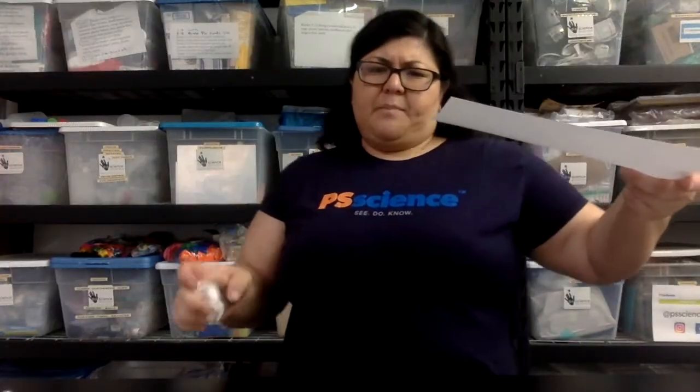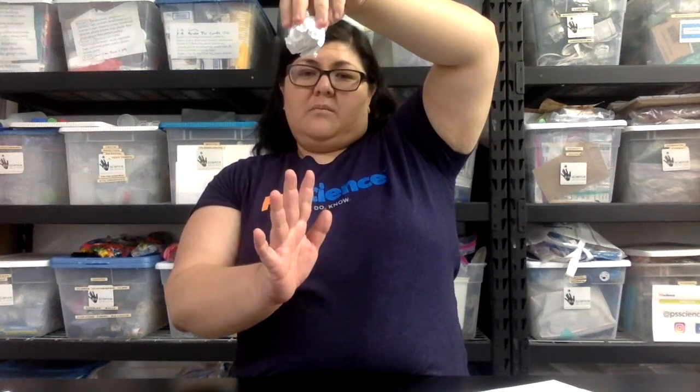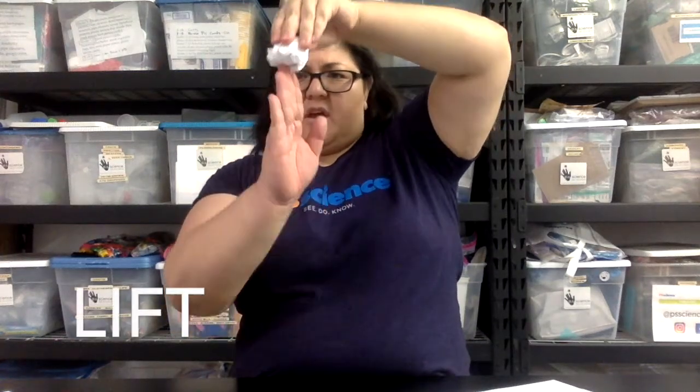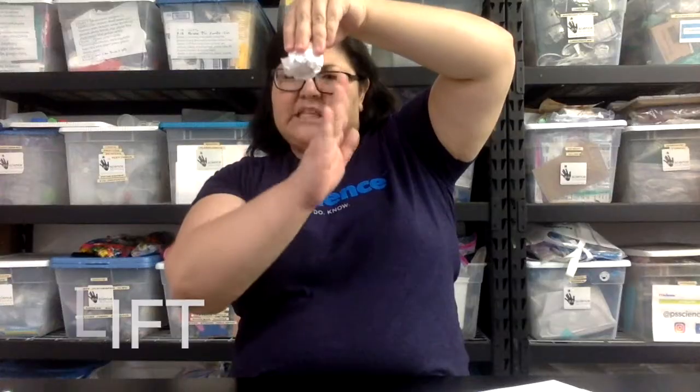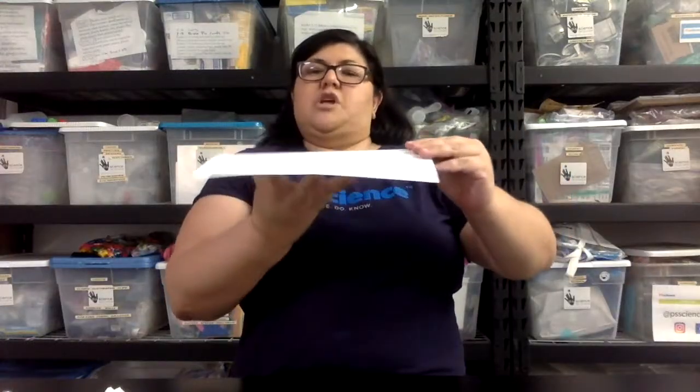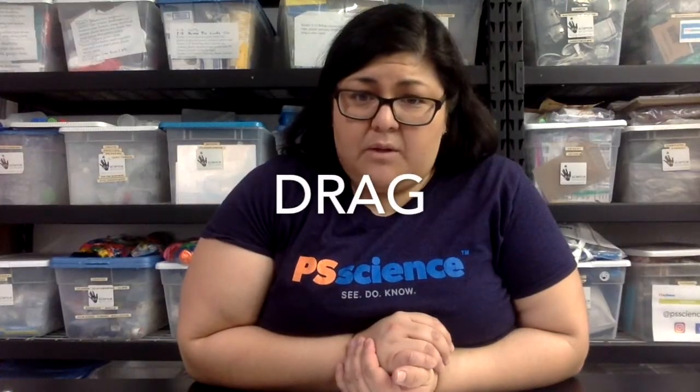Why does the crumply paper hit the table before the flat paper? The crumply paper has less surface area. Even though it weighs the same — there's the same amount of paper in it — as air pushes up on the falling paper ball, that's called lift — there aren't as many places for it to grab onto. Whereas in the falling flat paper, there's lots of places for the air to push up on and slow down the speed of the fall, creating more drag.